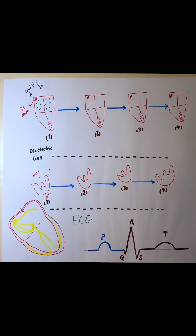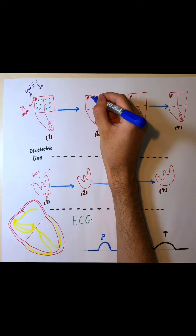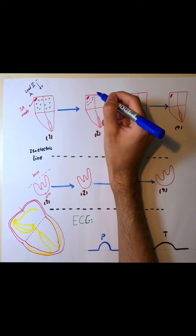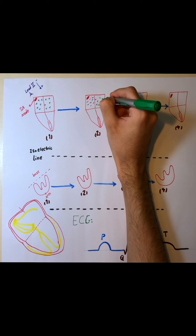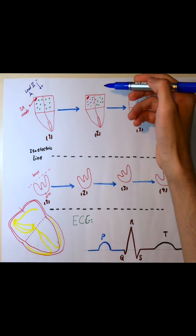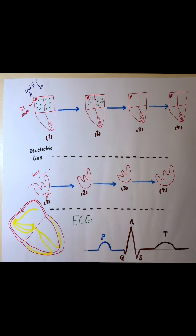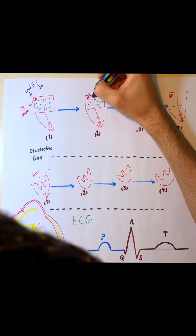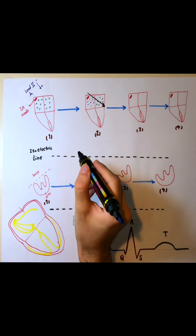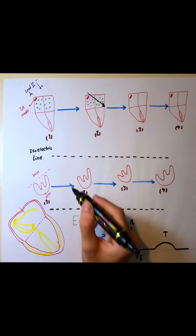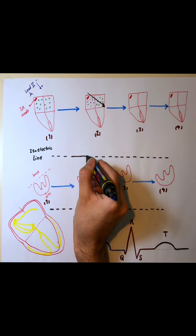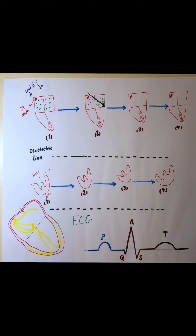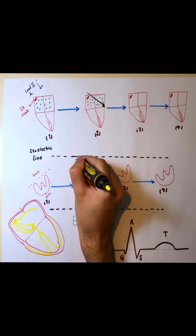Once our SA node in stage 2 starts to trigger our electric pulse, the distribution of different charges will be like this. The electrical current will be in this direction, from negative to positive. So in the first stage, where we have all positive charge on the surface of our atrium, the isoelectric line is marked as the first stage. This is our first wave.